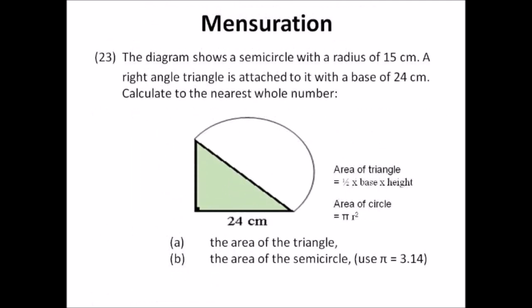Number twenty-three: mensuration. A semicircle has radius 15 centimeters, with a right-angle triangle attached to it with base 24 centimeters. Calculate: a) the area of the triangle — you have the base and need to find the height first; b) the area of the semicircle. Use pi equals 3.14. Area of a triangle is half times base times height. Area of a circle is pi r squared — but remember it's a semicircle, so what is the area of a semicircle?